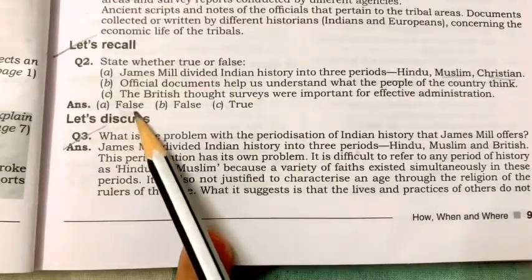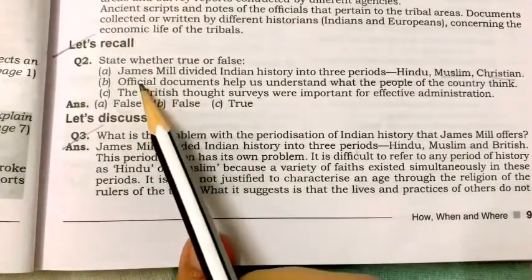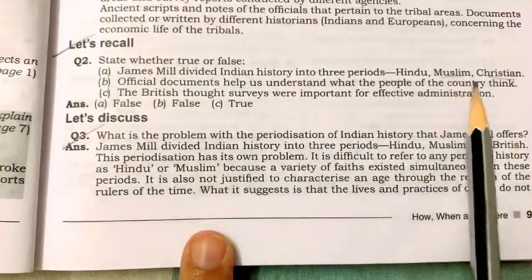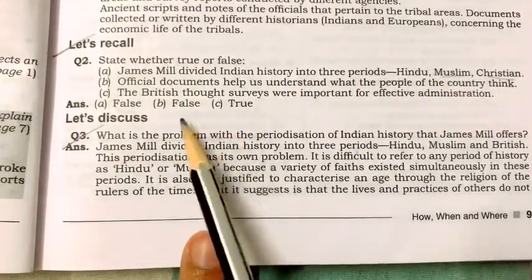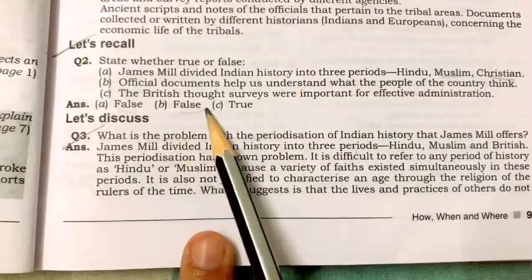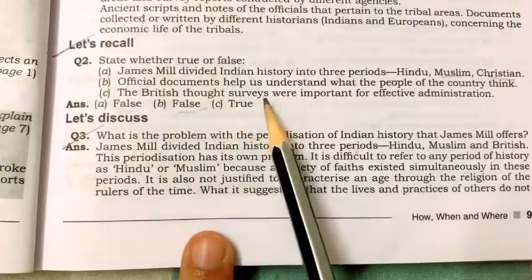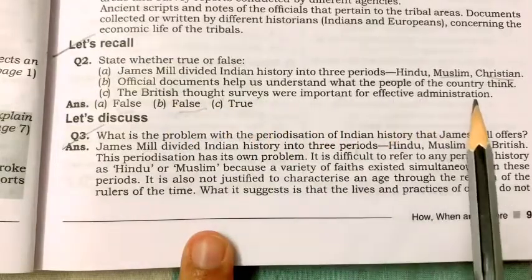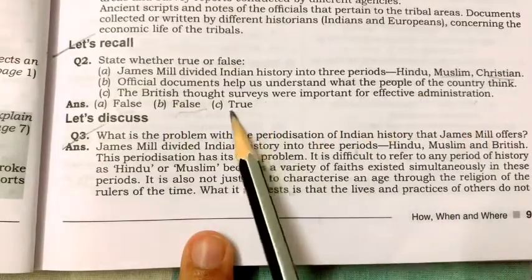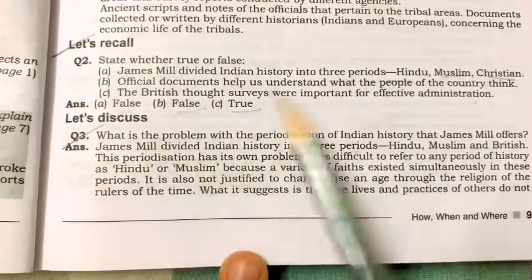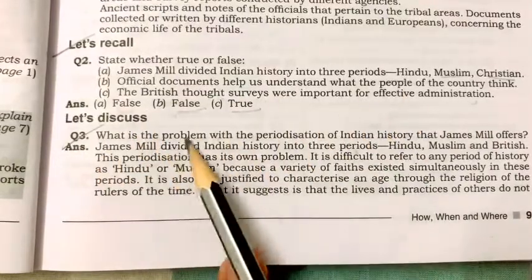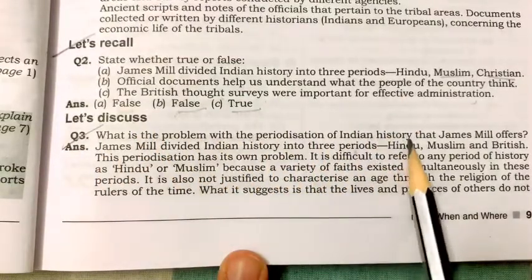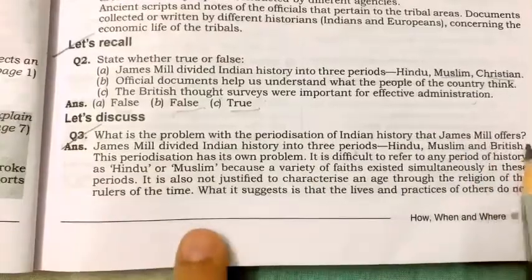Official documents help us understand what people in the country think — false. The British thought surveys were important for effective administration — true. Now let's discuss: what is the problem with the periodization of Indian history that James Mill offers?